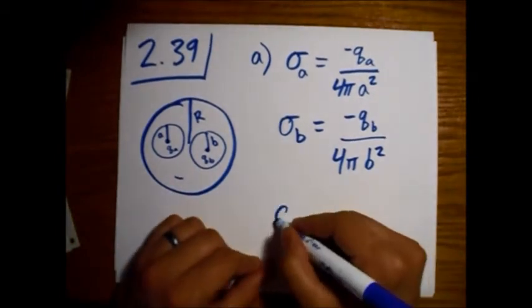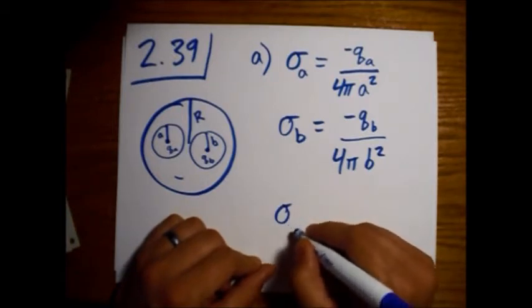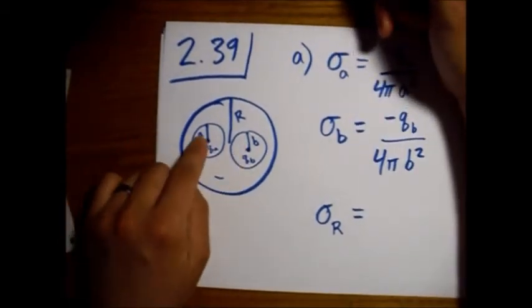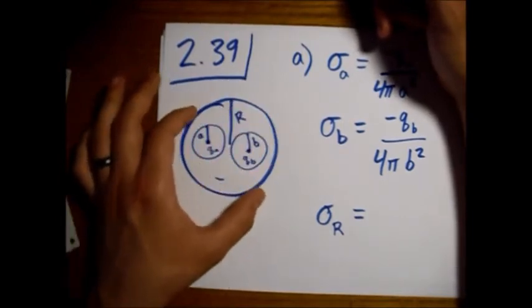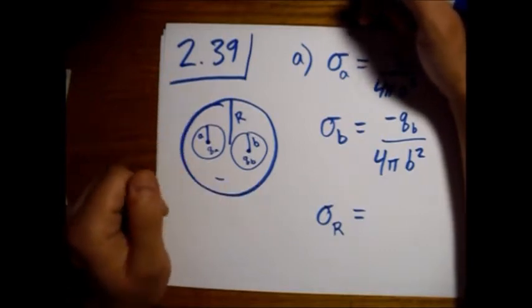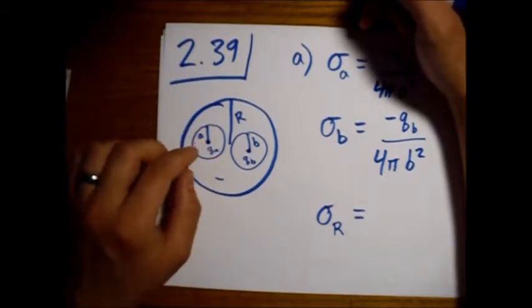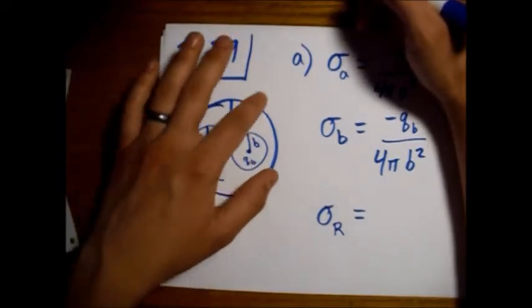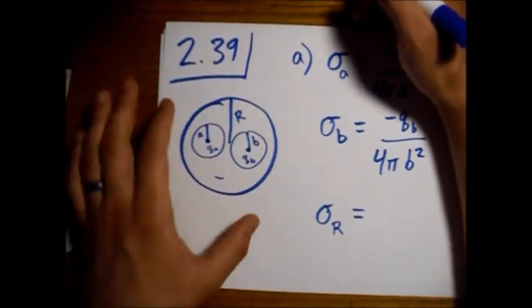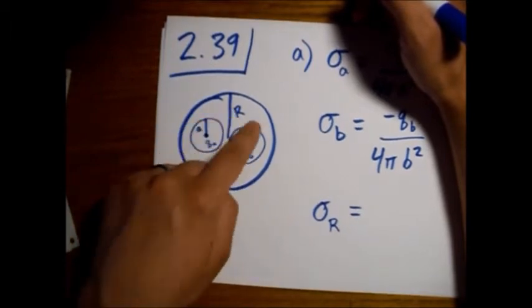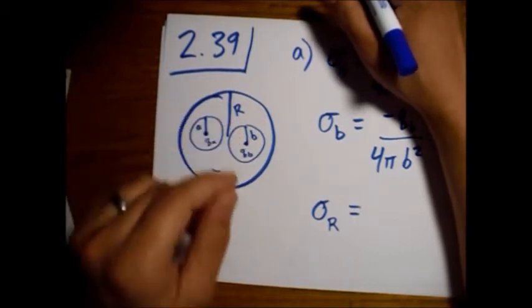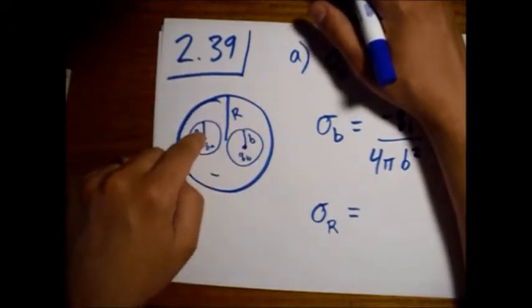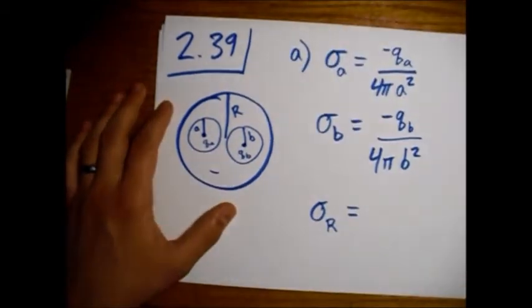Now we look at sigma big R. We're looking at the inside of this outer surface out here. Because the electric field inside this conductor is zero, there's no way of knowing what, basically, this outside cannot see what's going on inside here. There's this no man's land, zero electric field in here.